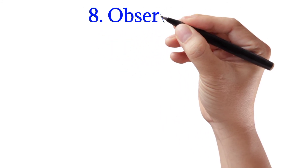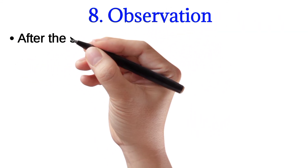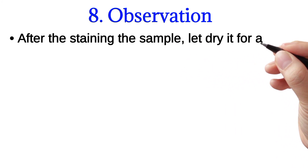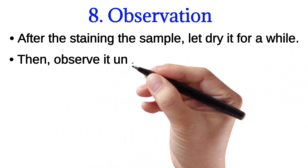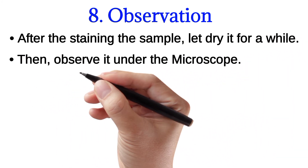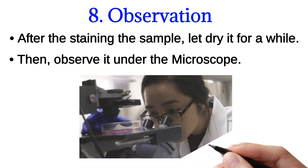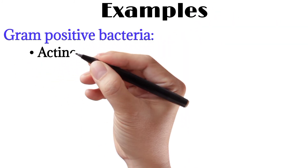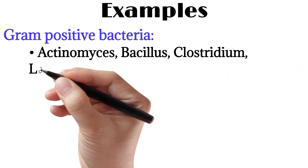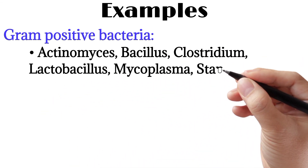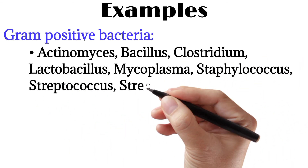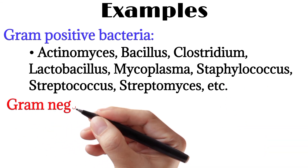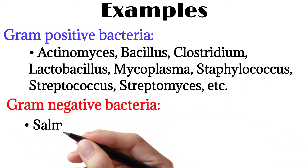The last step is the observation. After staining the sample, let it dry for a while, then observe it under the microscope as shown in the picture. Here are examples of Gram positive bacteria and examples of Gram negative bacteria.